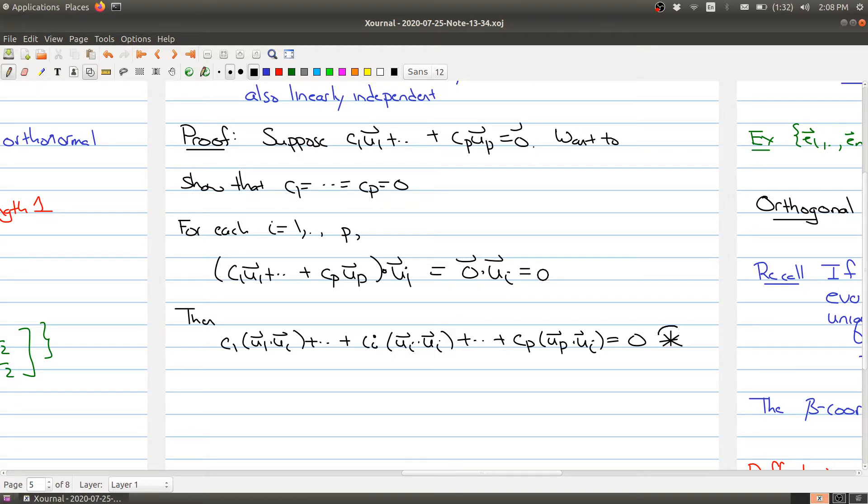And let's call this expression star, because we'll come back to it in a second. Now, our set S is assumed to be orthogonal. So all of these vectors are orthogonal. So that means that as long as we're not looking at this guy, ui dotted with itself, all the other vectors are orthogonal to each other.